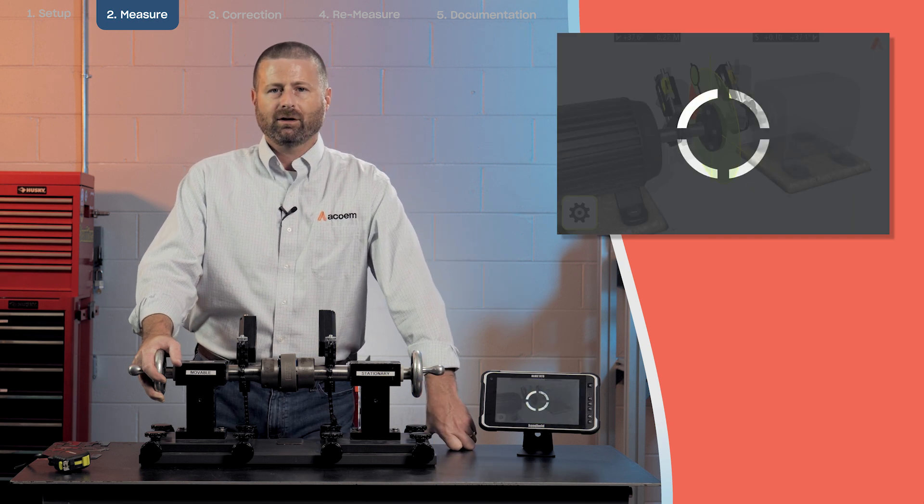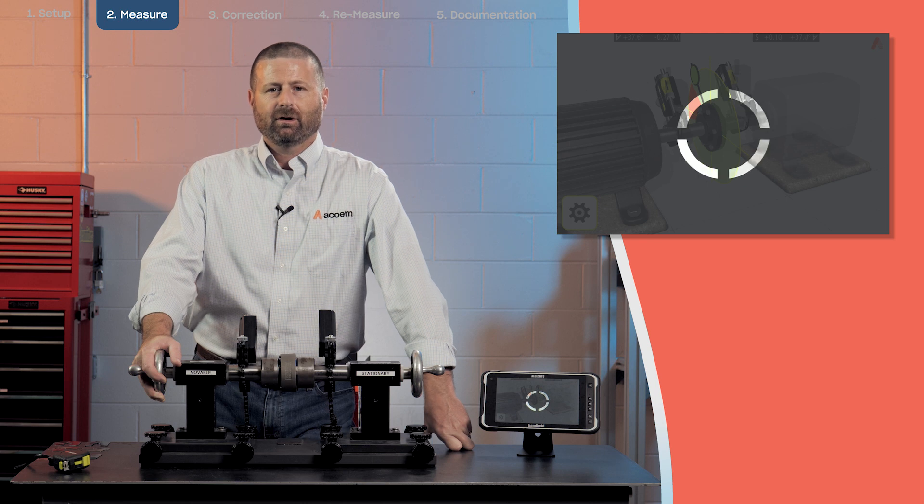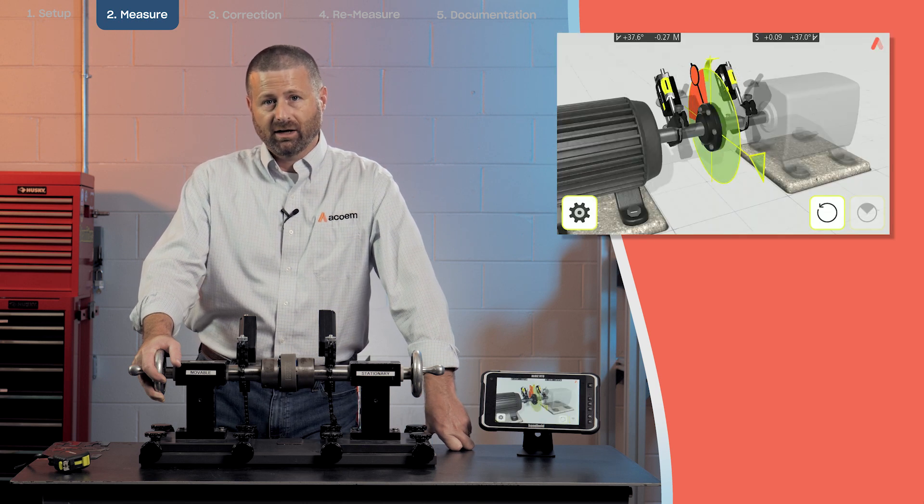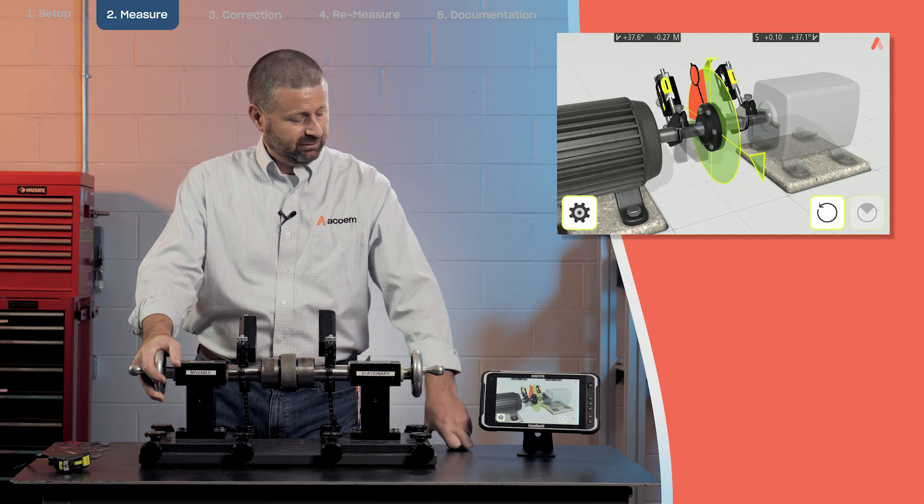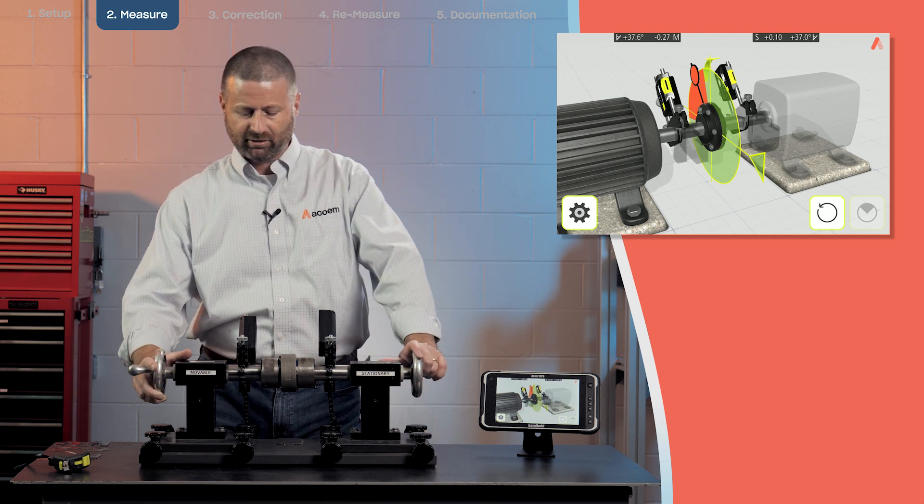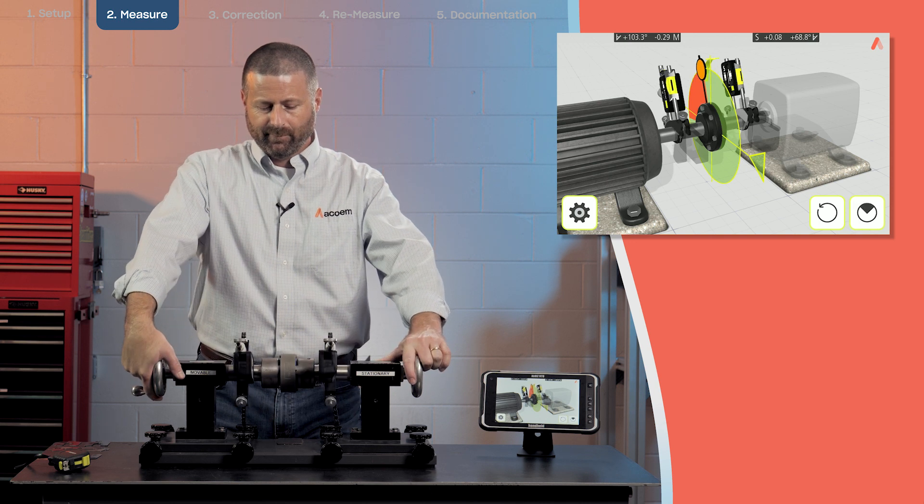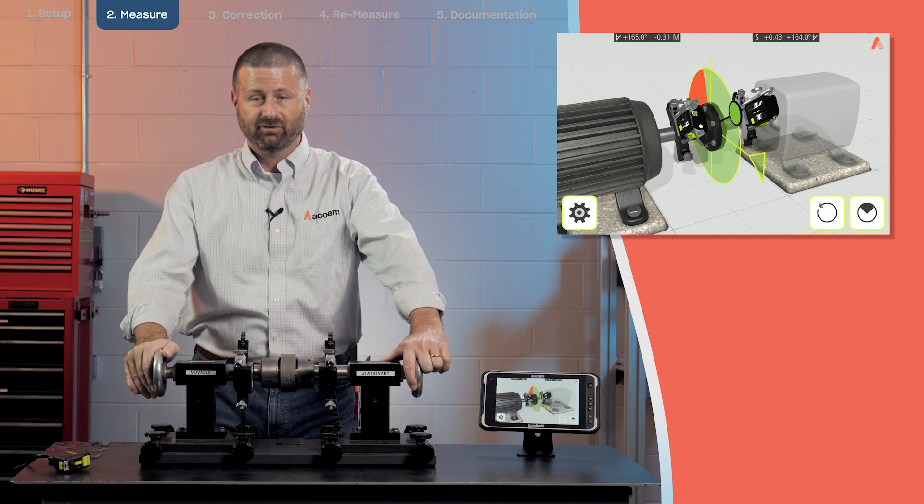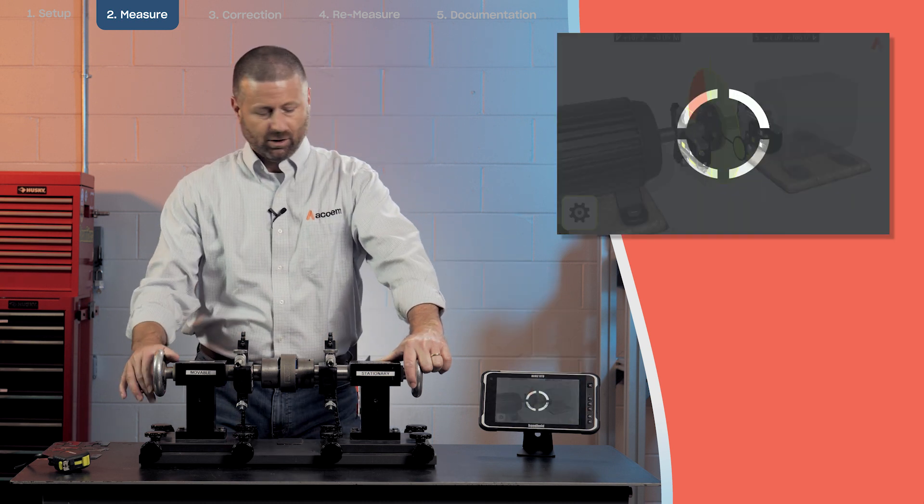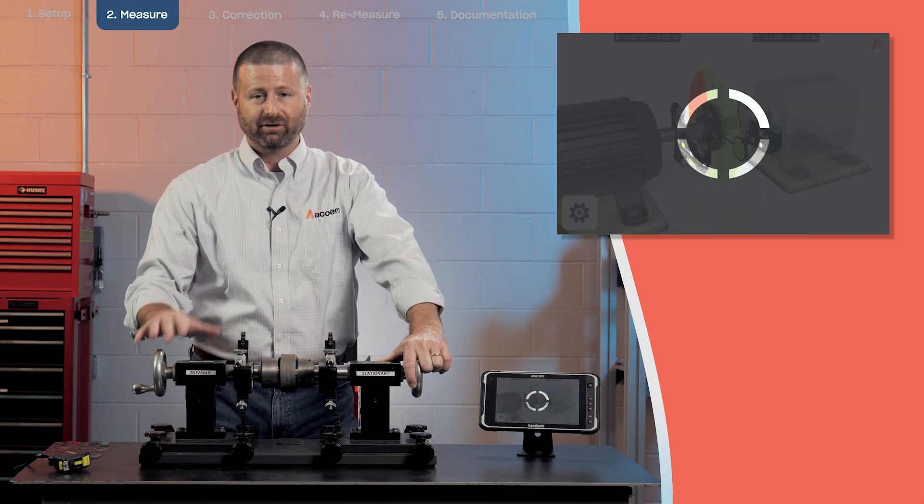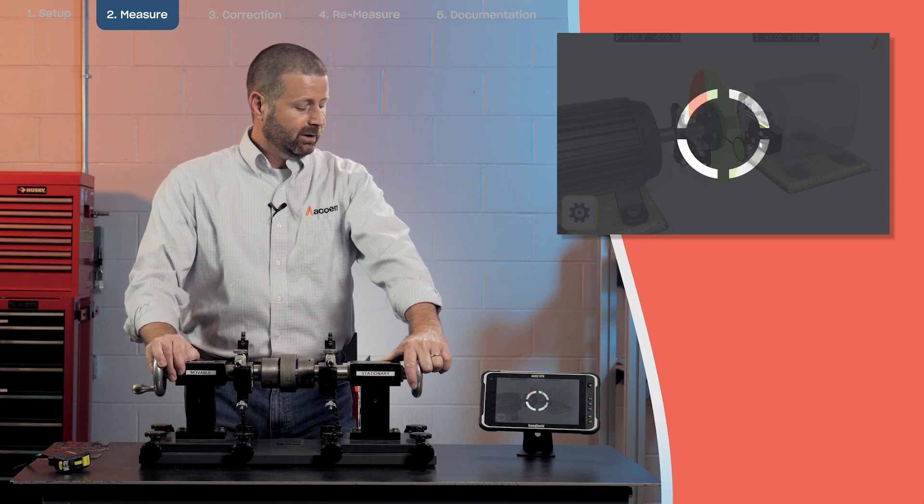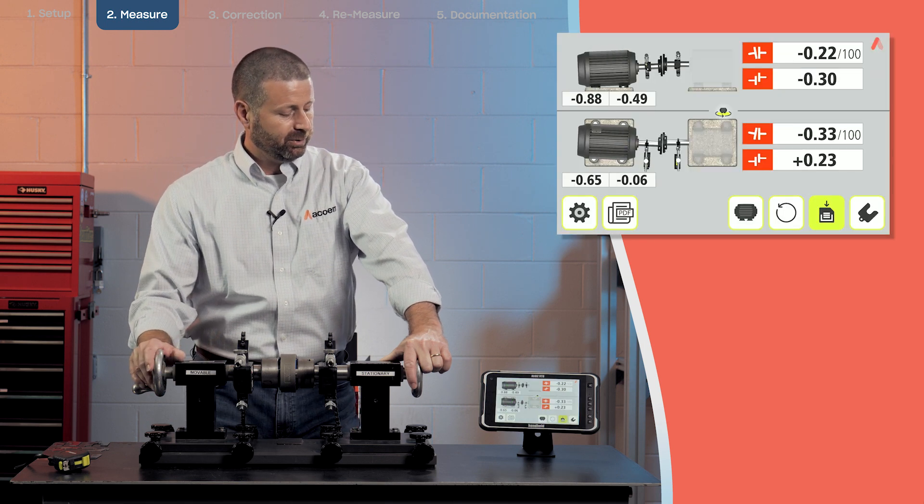It's also important that you leave the shaft in place. Don't rotate it while it's taking measurements. You saw that dancing dial in the center of the screen that indicates that the AT100 is taking measurements. We just want to leave the shaft in place while the measurements are being taken.